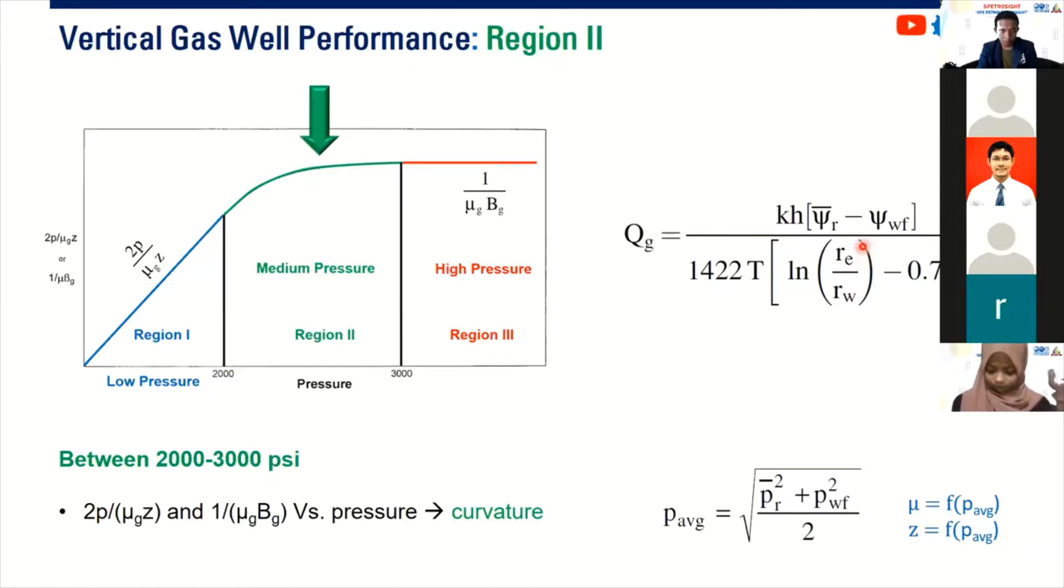You need to know about the permeability, you can ask the petrophysicist. Thickness, you can ask the petrophysicist. Temperature, you can do the measurement. RE or the radius of the reservoir, you can assume or maybe you can analyze that, you can predict that by pressure transient analysis or well testing. RW, the wellbore radius, you can ask the drilling engineer and you have to know the radius of the wellbore. And skin, you can predict that, you can do pressure transient analysis. It's easy, provided that you have all the data.